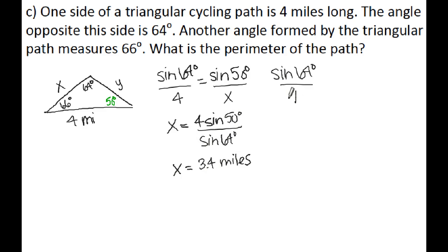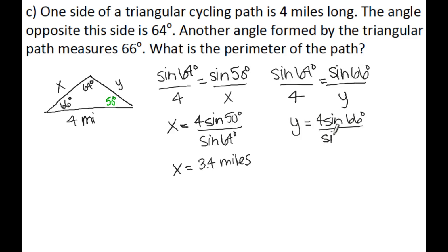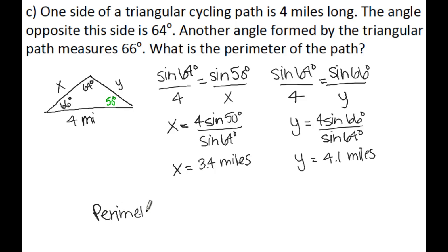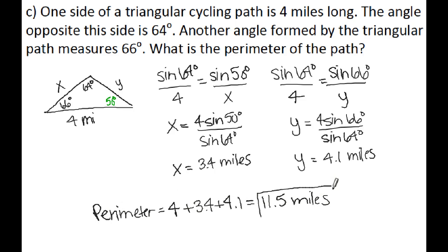Now solving for side Y: sine of 64 over 4 equals sine of 66 over Y. Cross-multiplying and solving gives Y equals 4 times sine of 66 divided by sine of 64, which is approximately 4.1 miles. The perimeter is all three sides added together: 4 miles plus 3.4 miles plus 4.1 miles equals 11.5 miles. So the perimeter of the path is 11.5 miles. That wraps up the first day of Law of Sines.